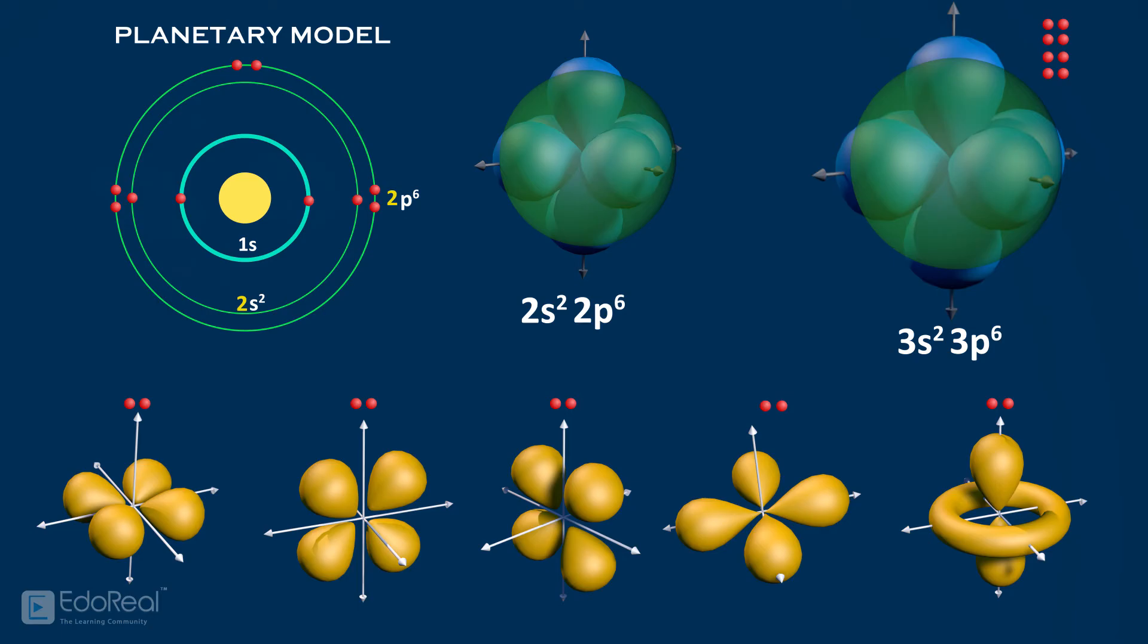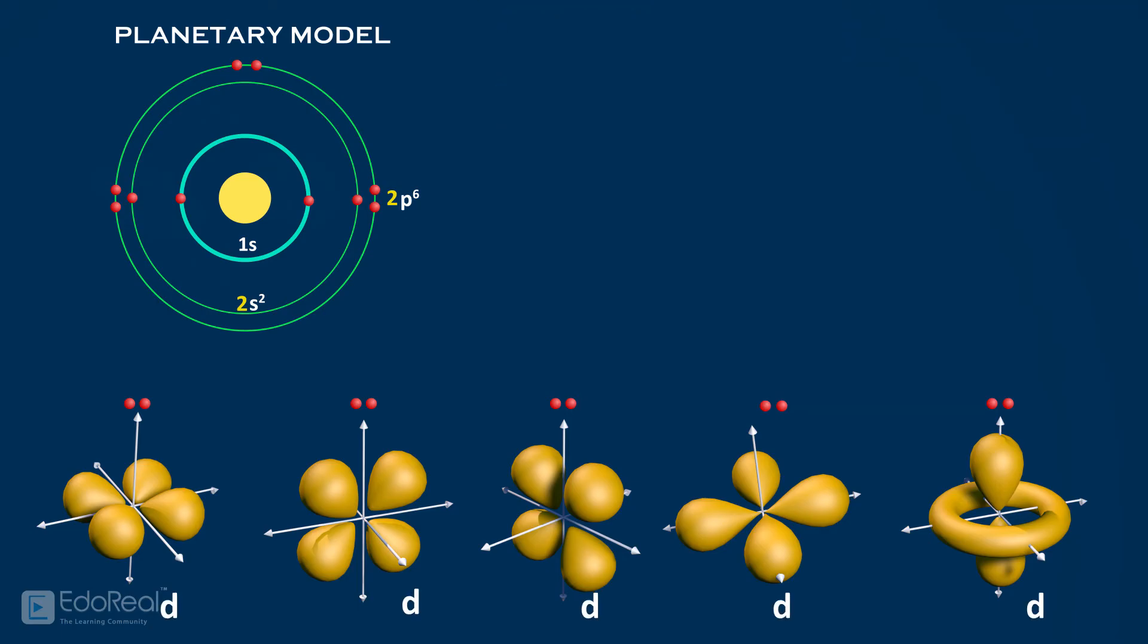And as represented with letter d, the entire space where the 5 pairs of electrons are found is called d orbital.